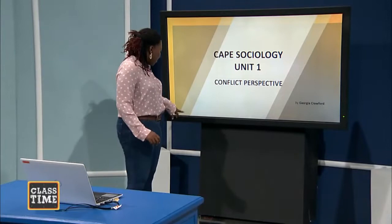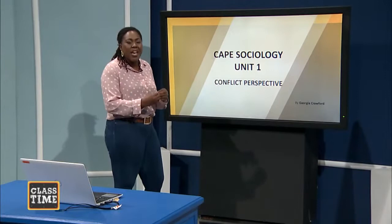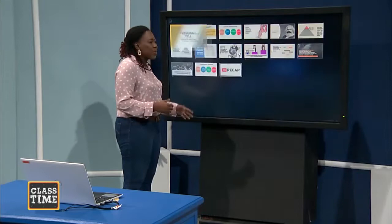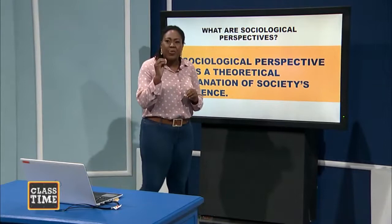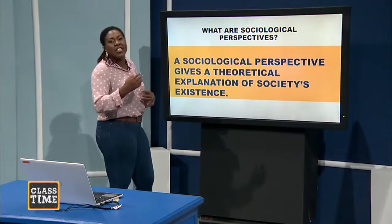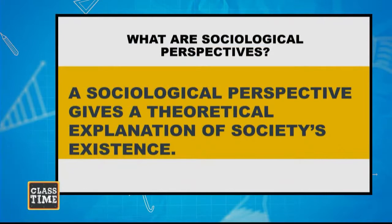You all remember last week — and you should always do a recap once you're going to go to another topic. Last week, we looked at the perspectives overall, and we said that a sociological perspective gives a theoretical explanation of society's existence. All sociological perspectives try to explain why society exists. Sociology in and of itself is the study of society and why it exists.